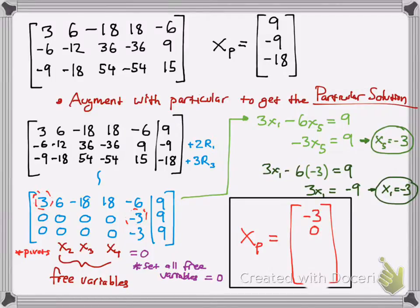And remember we set all the other variables equal to 0. So x2, x3, and x4 are all equal to 0. And finally we solved for x5, which is negative 3. And you have your particular solution.